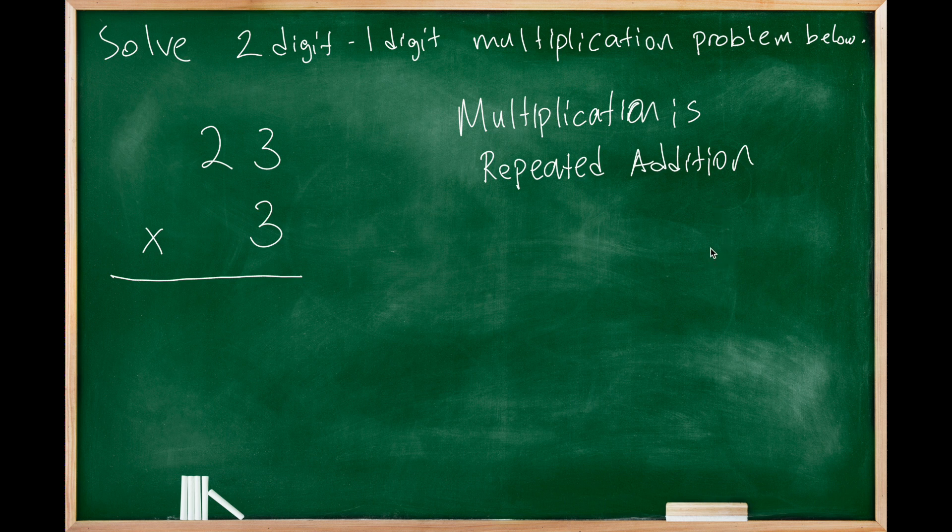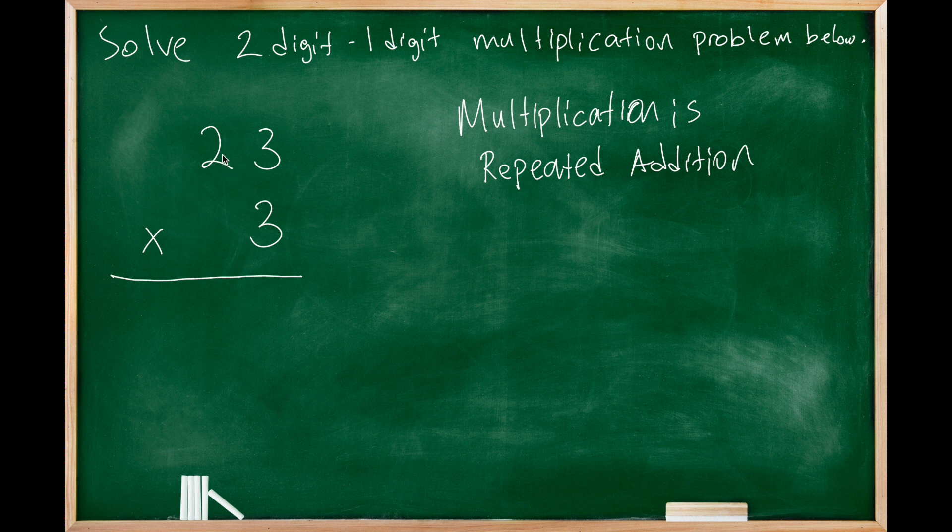Multiplication is repeated addition. In the standard algorithm, we multiply the ones digit of the second number and write it below: nine. And we multiply three and the tens place digit, two. Three times two is six. This is how we do this multiplication problem in standard algorithm.